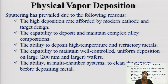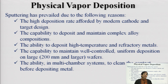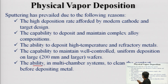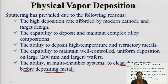Sputtering is preferred for the following reasons: it has a high deposition rate afforded by modern cathode and target design; good ability to maintain complex alloy compositions; ability to deposit high-temperature and refractory materials; well-controlled and uniform deposition; batch processing of 200 mm or larger wafers; and in-situ cleaning feasibility in multi-chamber systems before deposition.